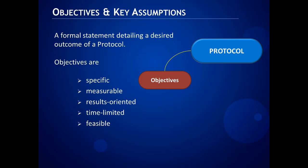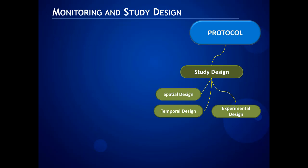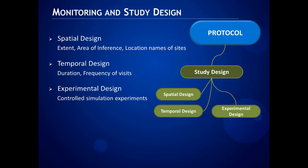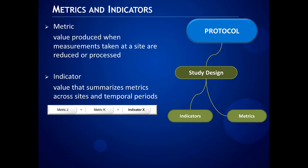Protocols have components. To promote consistency among organizations, we use standard terms. One of the most important components of a protocol are objectives. They're specific, measurable, time-limited, and feasible. They're not the broad goals of the project, because a project can have several protocols. For instance, the objective 'to increase abundance' is too broad. Better to say 'estimate fall juvenile out-migration from Swift Creek.' A study design is an important part of the protocol and describes either monitoring or experimental designs — an explanation of where and when measurements are taken. Metrics are calculated so that indicators can be determined for meeting your objectives. Metrics are a summary of measurements taken at a site.